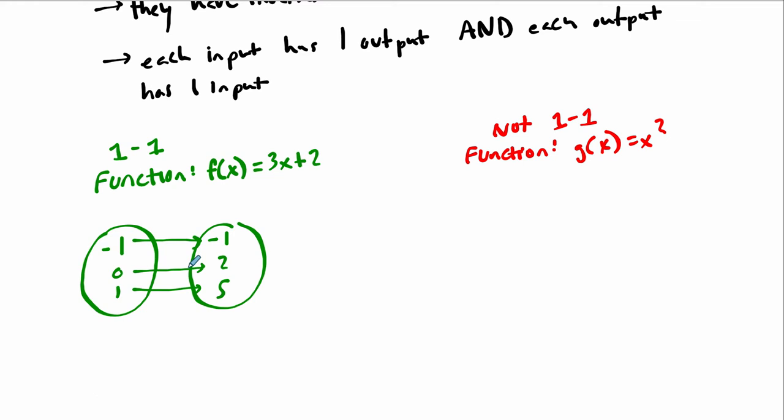But if we were to try and reverse it, in other words, if we're trying to find the inverse, we could say that, all right, negative 1 goes back to only negative 1, so it's reversible. 2 goes back to only 0, so we know where it goes. And 5 only goes back to 1. In other words, it goes in both directions, that oneness.